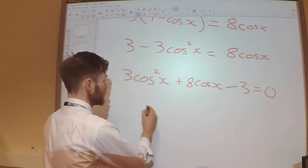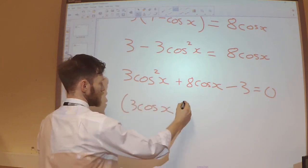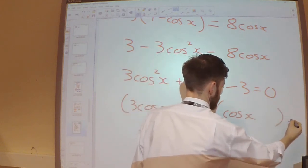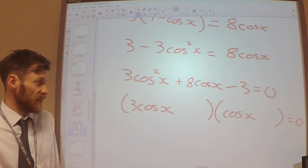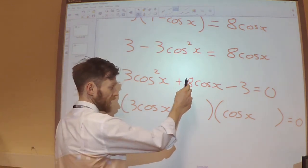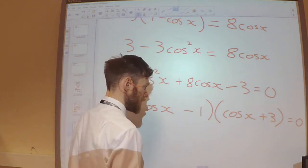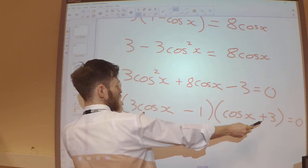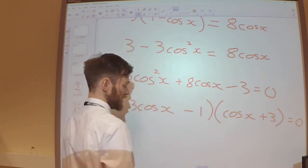And now I can factorise this. So it's going to need to be, if I want a plus 8, that's going to have to be a plus 3 and that's going to have to be a minus 1. So that will give me a plus 9 cos x minus 1 cos x will give me a plus 8.